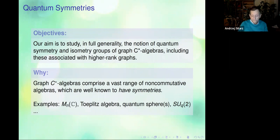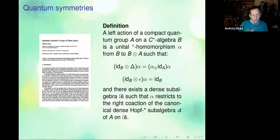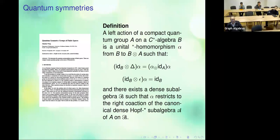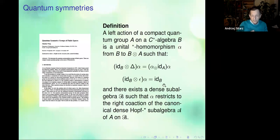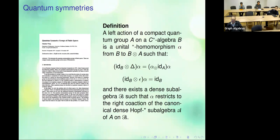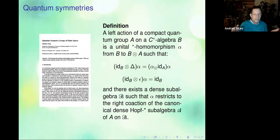What is the definition? We use the definition from the seminal paper by Wang: what is a quantum symmetry group? When you have a compact quantum group, you have a C*-algebra, and you have a unital star morphism — this is the coaction, specifically the right coaction — which satisfies standard properties considering the co-product and the co-unit in the compact quantum group.